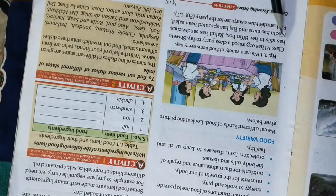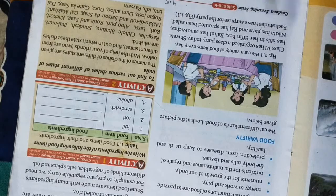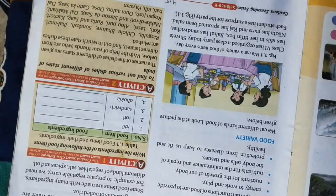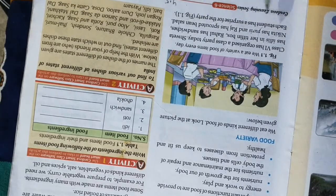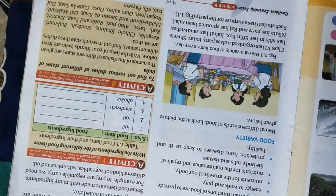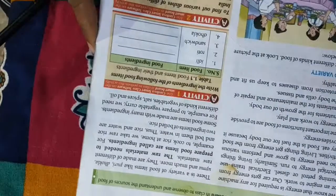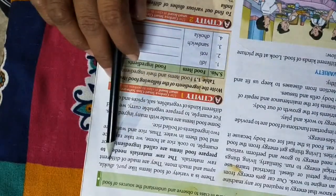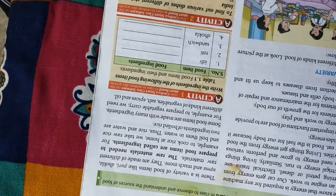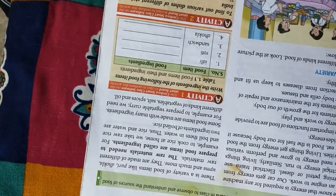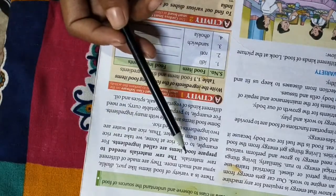Each student has a surprise for the party. There is a variety of food items like puri, dhokla, upma, and much more. These are made by different raw materials.